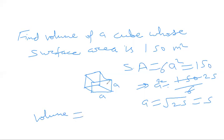So what is the volume of a cube? You have read before. Length into breadth into height, that is a cube. And what is a here? A is 5. What is 5 cube? 125 meter cube. Volume is always in meter cube, and area is always in meter square.